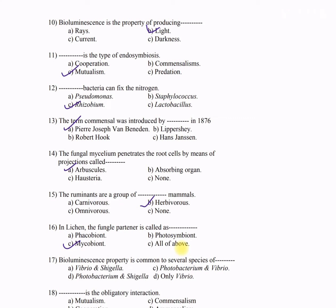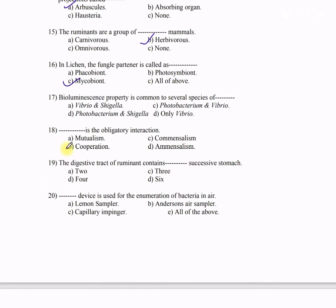Question 17: Bioluminescence property is common to several species of — A) Vibrio and Shigella, B) Photobacterium and Vibrio, C) Photobacterium and Shigella, D) only Vibrio. The correct answer is B — Photobacterium and Vibrio.